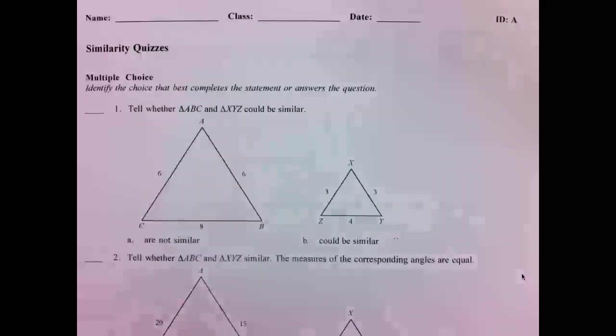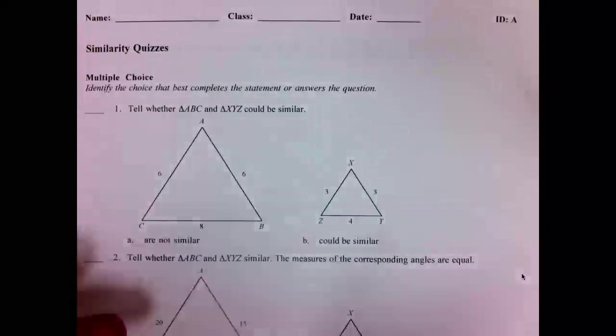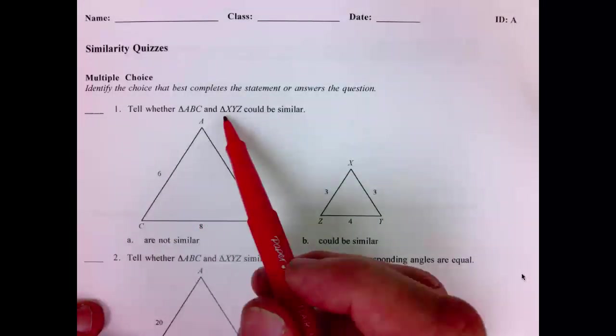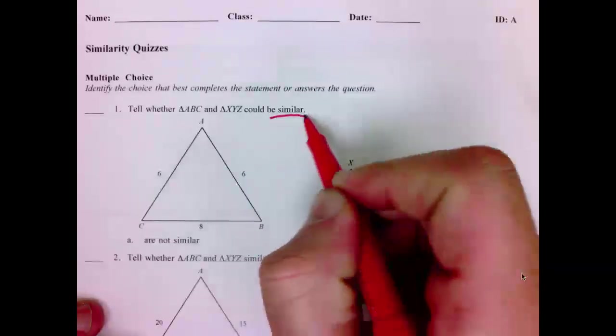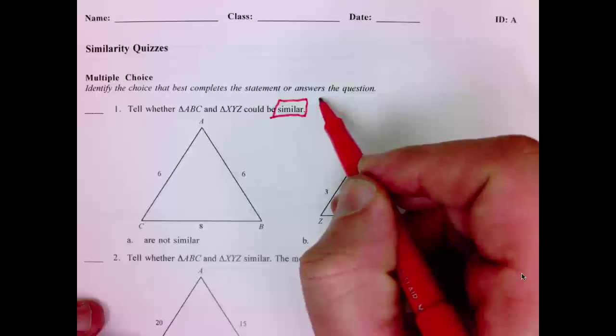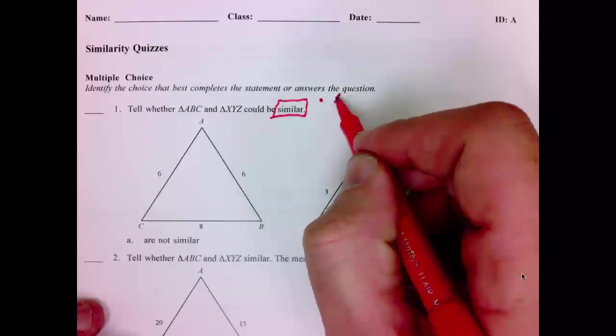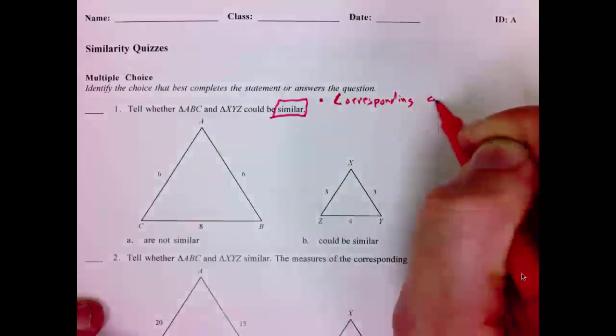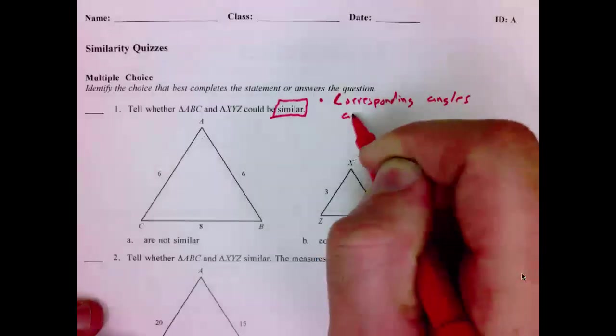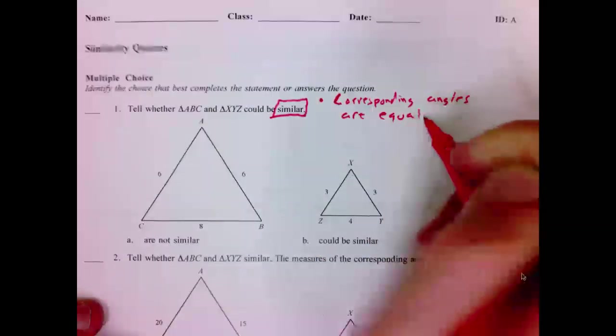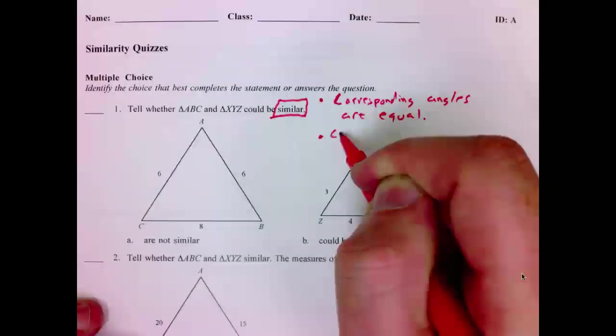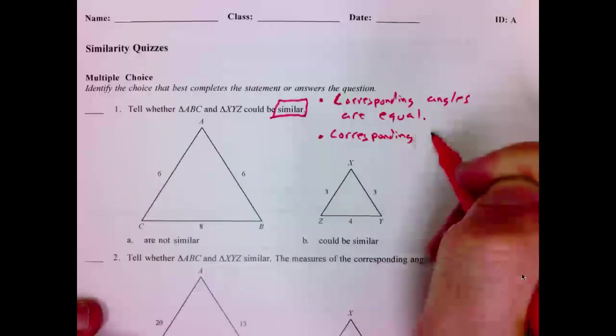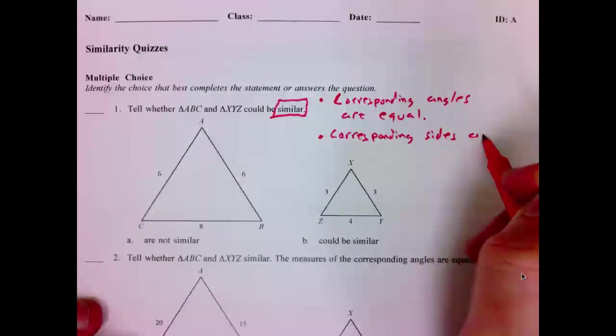In this video, we're going to grade the quiz that you just took. I'm looking at problem number one. It tells whether triangle ABC and XYZ could be similar. We know two things about similar figures - for figures to be similar, their corresponding angles are equal and their corresponding sides are proportional.